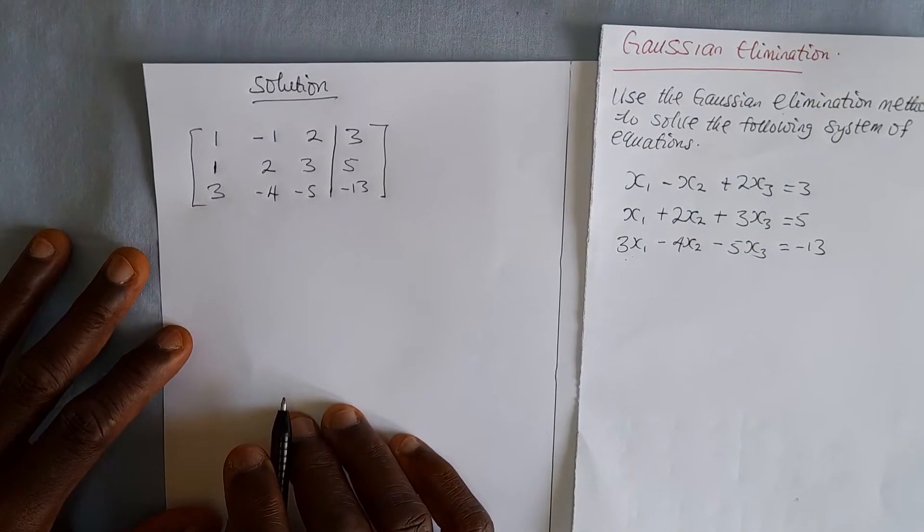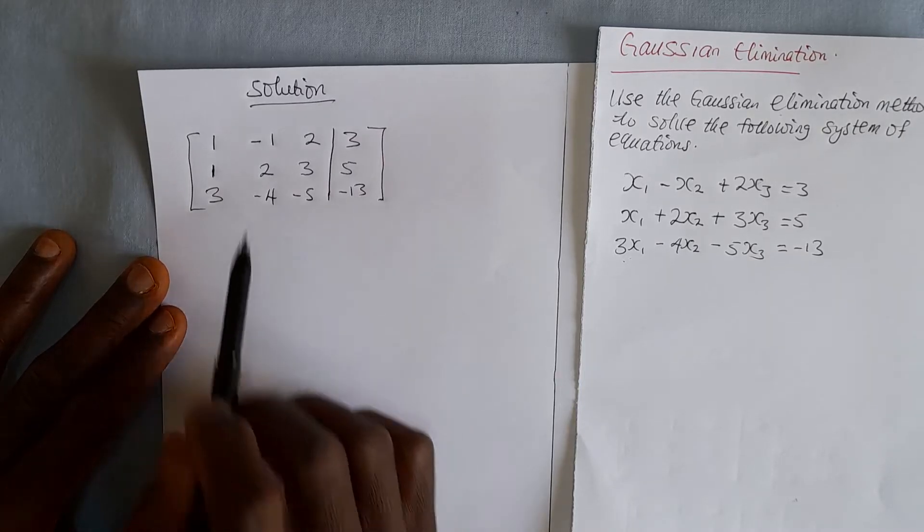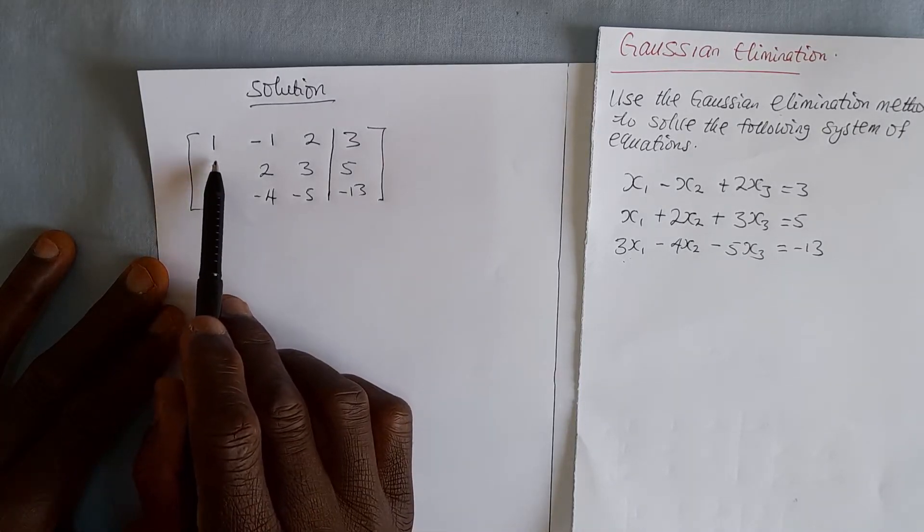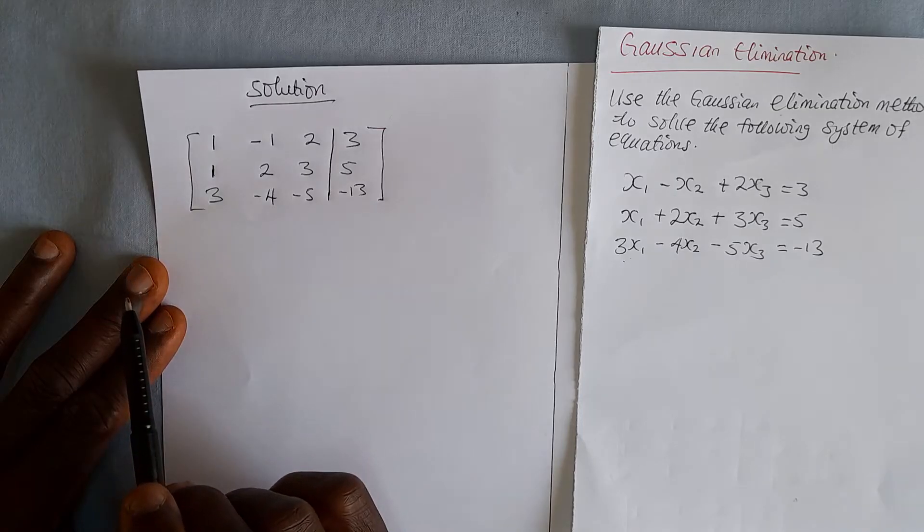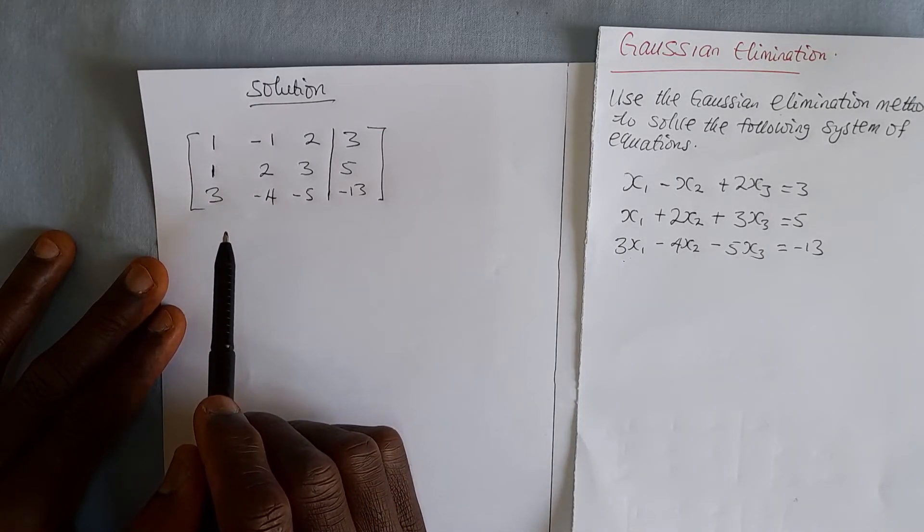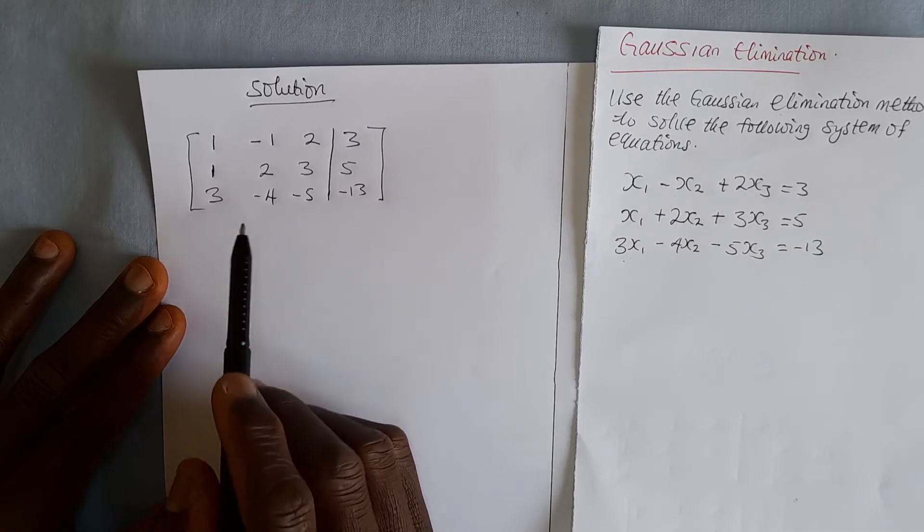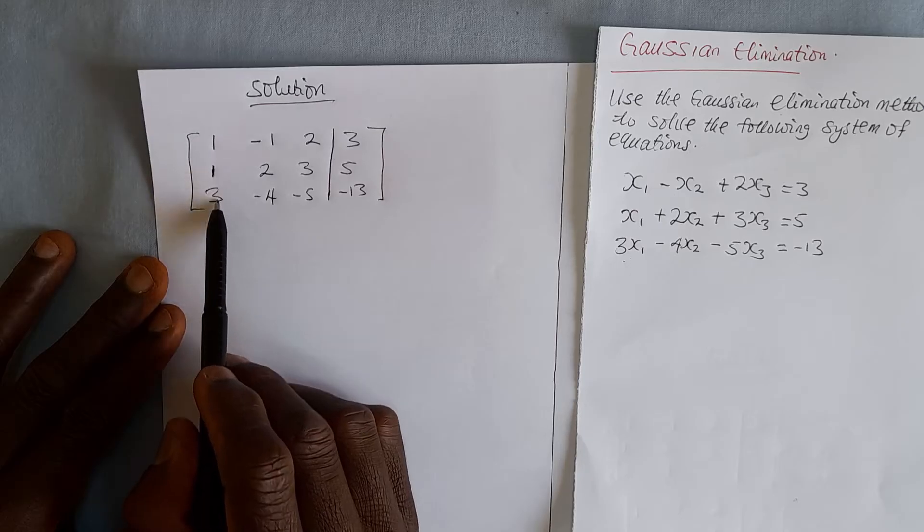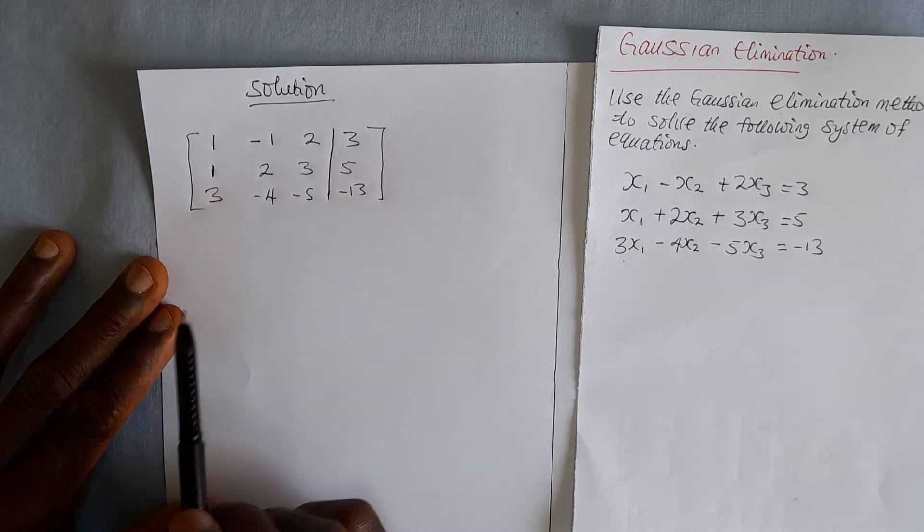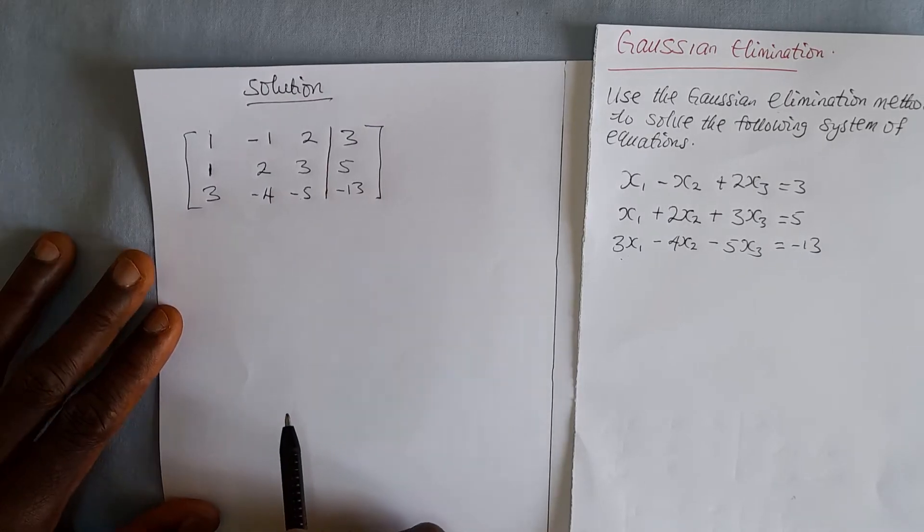Remember that in this elimination method, what our aim is to make the elements below the leading diagonal into zeros. And the leading diagonal itself, we have to make it into ones. That is, this 1, 3, and 4 have to be zeros. And this, this, and this have to be ones. That is our aim here.